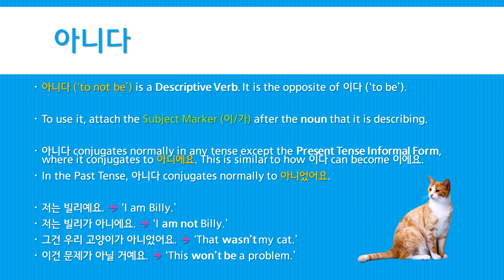Here are some example sentences. 저는 빌리예요 — I am Billy. 저는 빌리가 아니에요 — I am not Billy. 그건 우리 고양이가 아니었어요 — That wasn't my cat. 이건 문제가 아닐 거예요 — This won't be a problem.